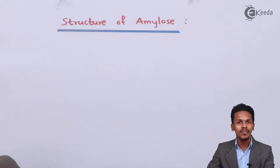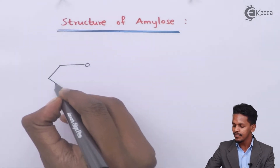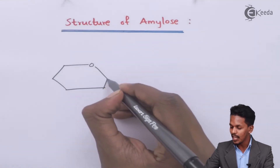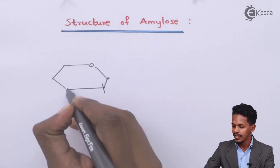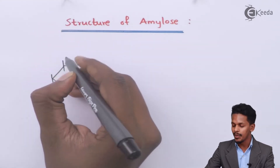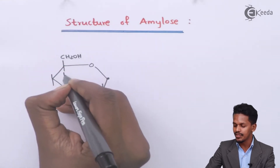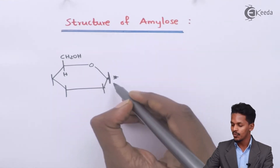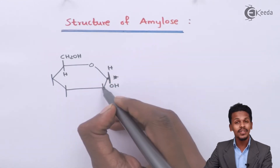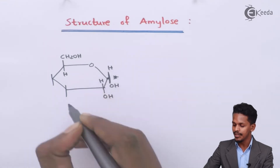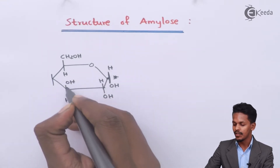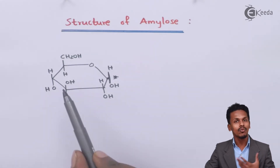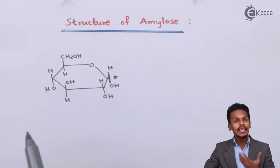So we understand that amylose is a combination of alpha-D-glucopyranose. Here I'm drawing the Haworth projection formula. This is carbon number 1, carbon number 2, 3, 4, 5, and carbon number 6, where it consists of CH₂OH. Here at the anomeric carbon atom there is OH, and here there is H. The second carbon atom has OH and H. On the third carbon atom, H is downward and OH is upward. This is the alpha-D-glucopyranose in the Haworth projection.